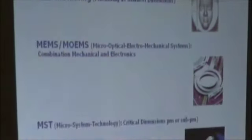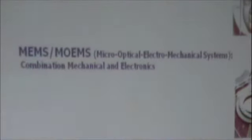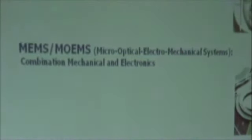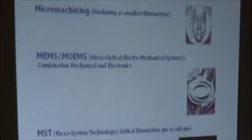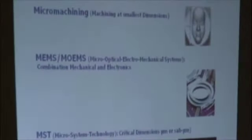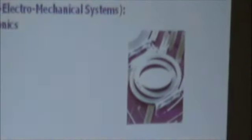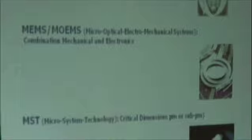The next abbreviation is used mostly in the United States: MEMS or MOEMS. MEMS is micro-electromechanical system, and MOEMS is micro-optical electromechanical. What does it mean? It means you make a chip, like an electronic chip for your computer. Now, if you integrate into that chip also mechanical parts — mechanical parts could be, for example, this mirror you see on the right-hand side that integrates directly into the chip — or optical systems. These are the abbreviations used in the United States for this technology.